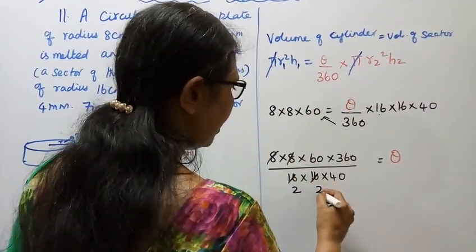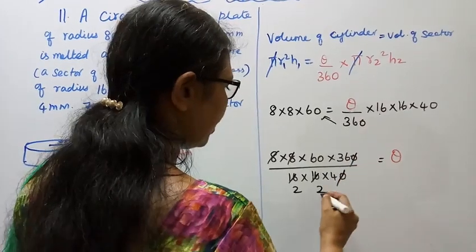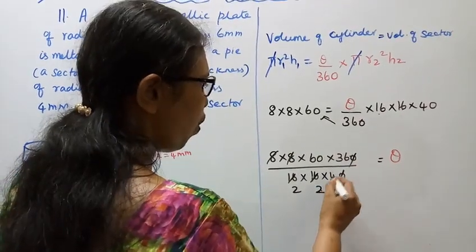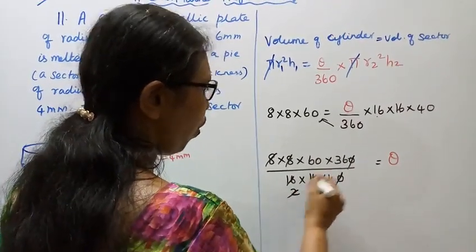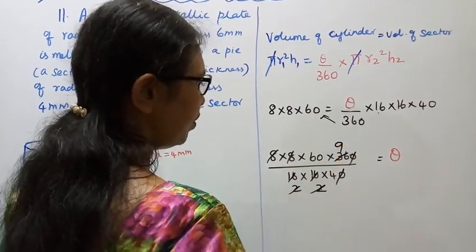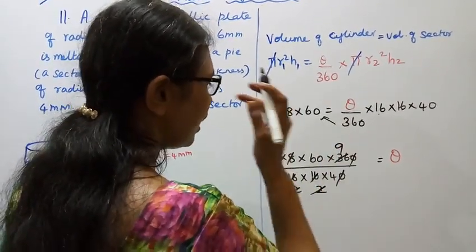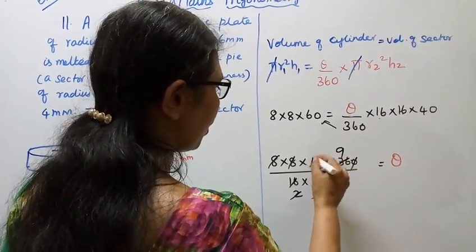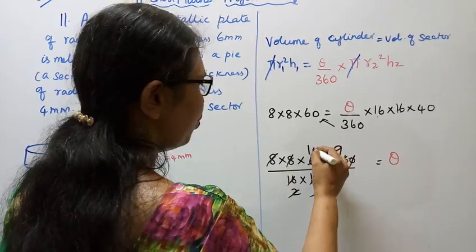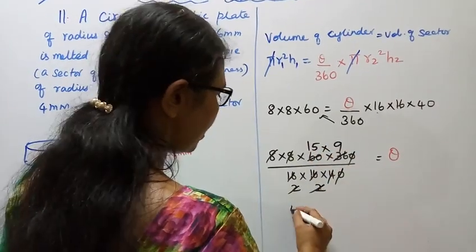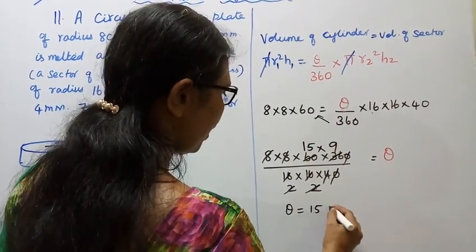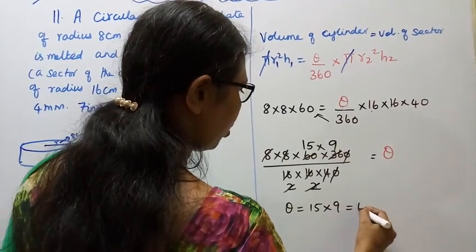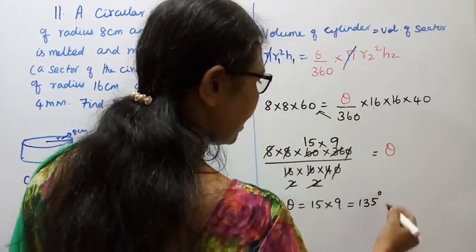2 to 4, 2 to 4. 4 times 9, so theta by 360 equals 4 times 9, that's 1 over 15. Theta equals 15 times 9, that equals 135 degrees.